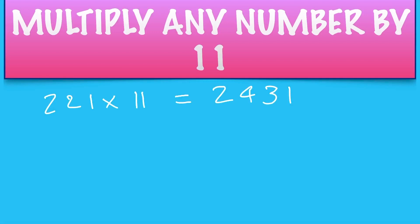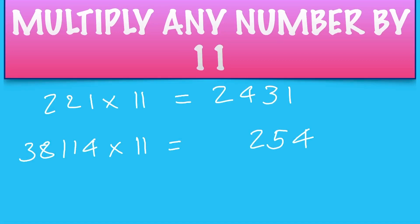Let's say we've got 3814 times 11. You've got 4, then 4 plus 1 is 5, 1 plus 1 is 2, 1 plus 8 is 9, 8 plus 3 is 11, 3 plus 1 is 4. So the answer is 4, 1, 9, 2, 5, 4.